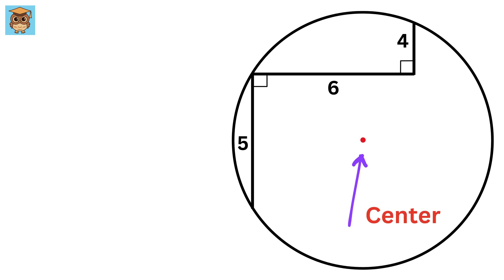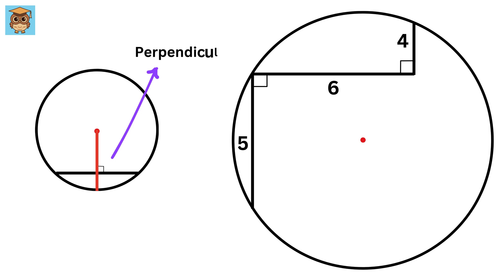Let us start by marking the center of this circle. Now in a circle, the line segment from the center that is perpendicular to a chord will also bisect the chord. This means that the perpendicular line from the center of a circle to its chord divides it into two equal segments. This is called the chord bisector theorem.